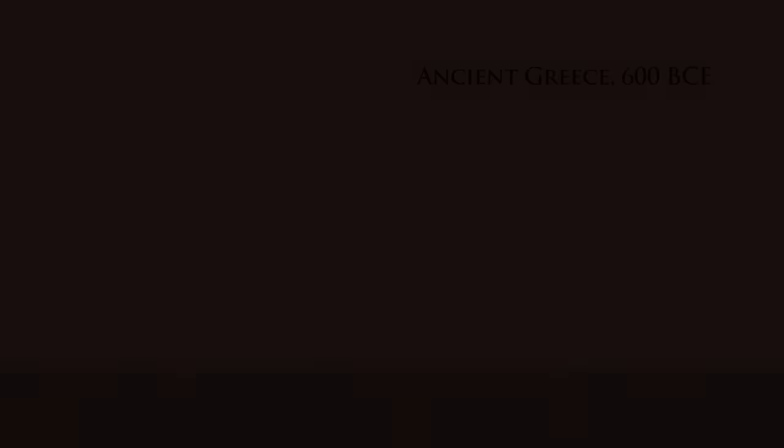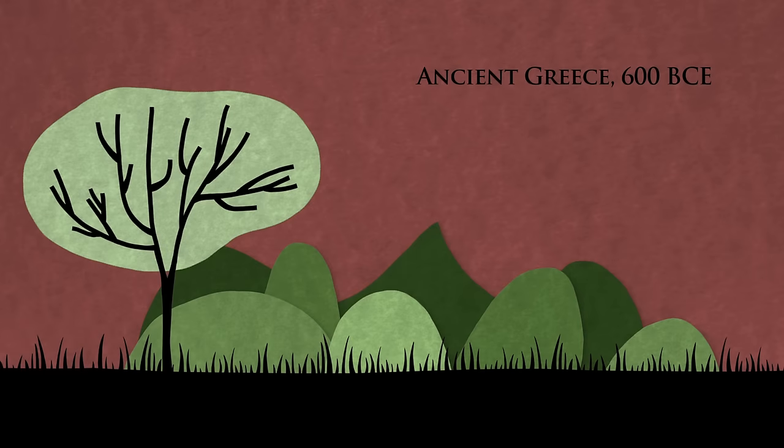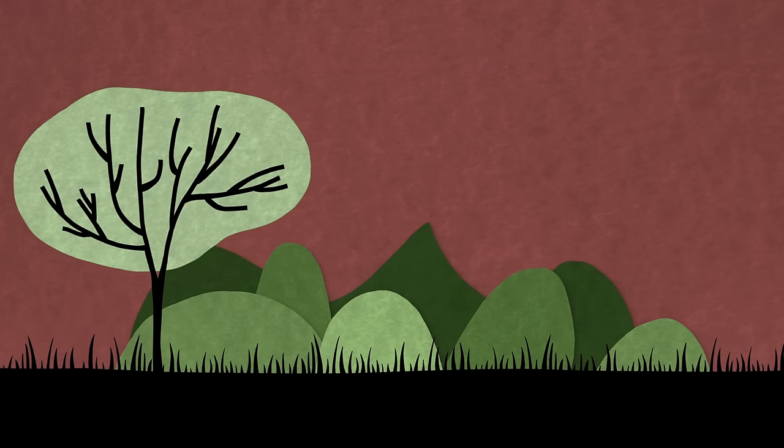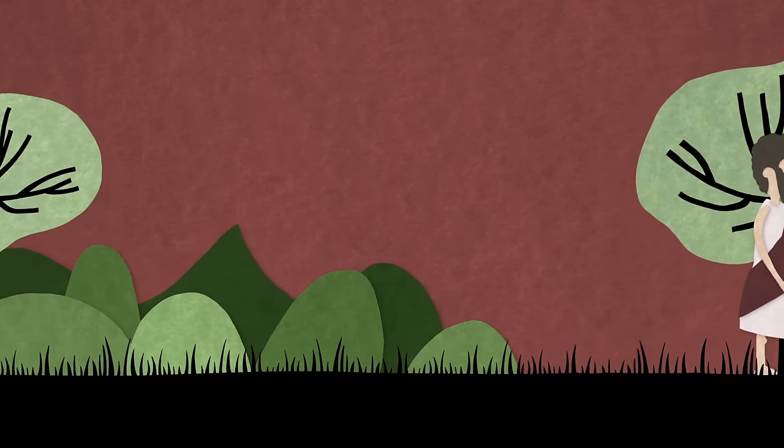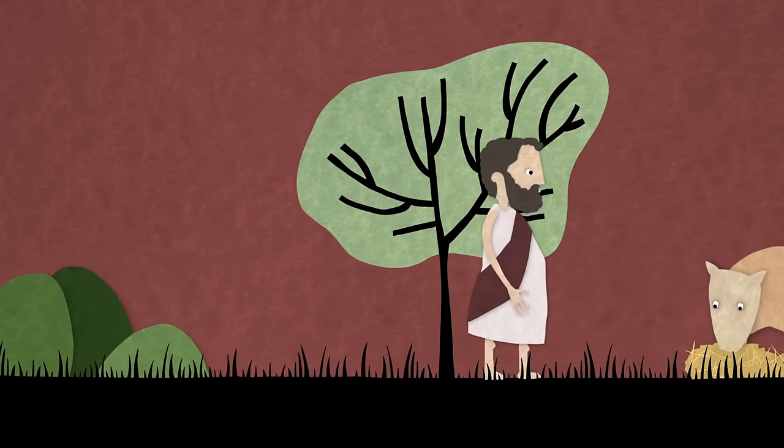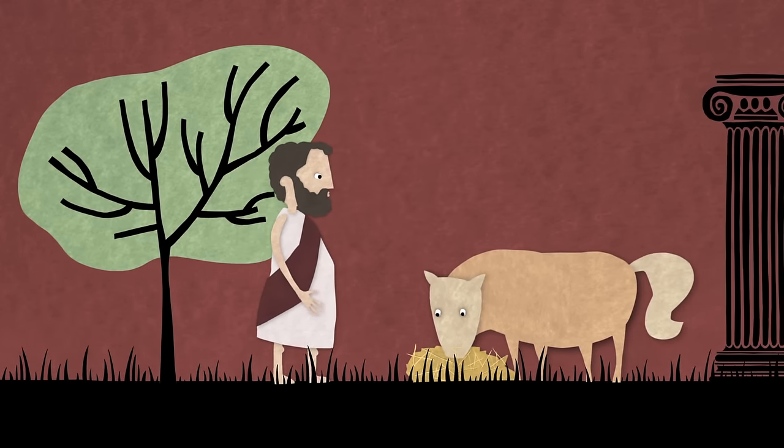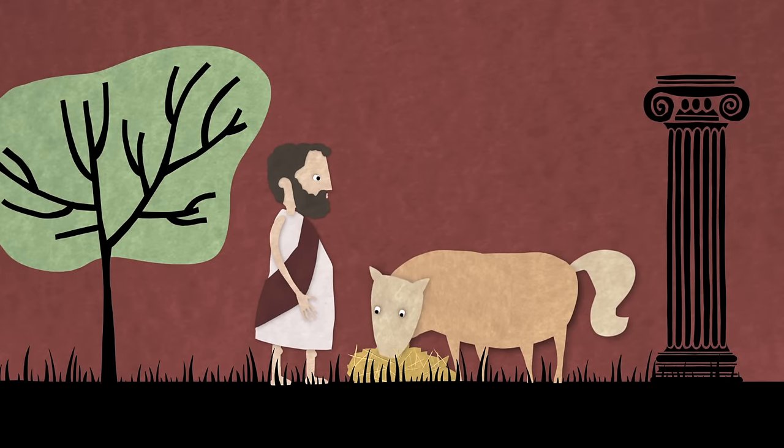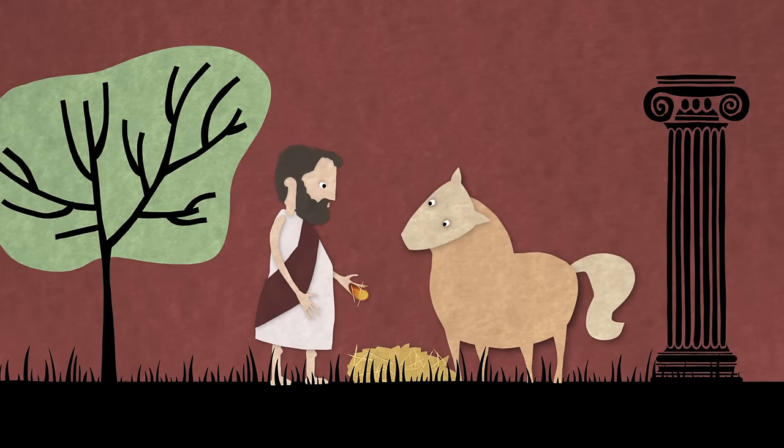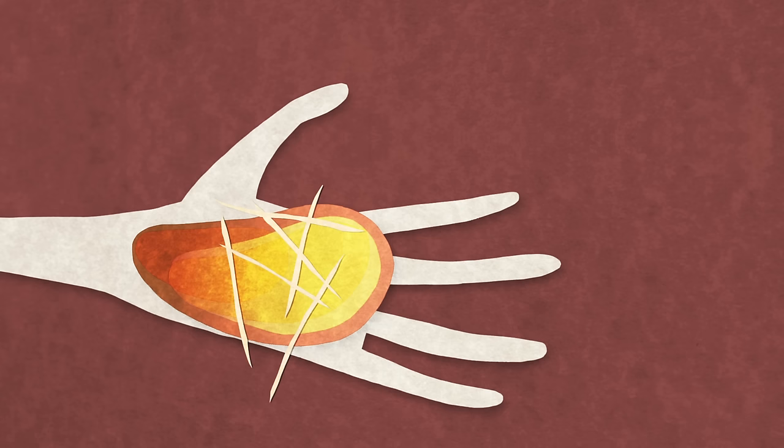It all begins over 2,600 years ago. An ancient Greek called Thales of Miletus is thought to be the first person to observe what we would today call electrical phenomena. He discovered that a piece of amber when rubbed with fur could pick up small pieces of straw. In Thales' language, amber was called electron.